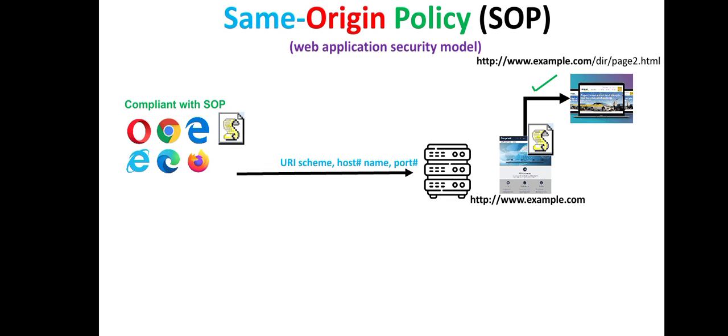Same origin policy will provide protections against cross-site attacks. For example, this is a bank website to which a user is already logged in using his web browser. This first website is running a malicious script which is trying to perform a cross-site request forgery attack by using the credentials of the authenticated user. This attempt would be blocked by same origin policy since the bank domain is different than the malicious website.